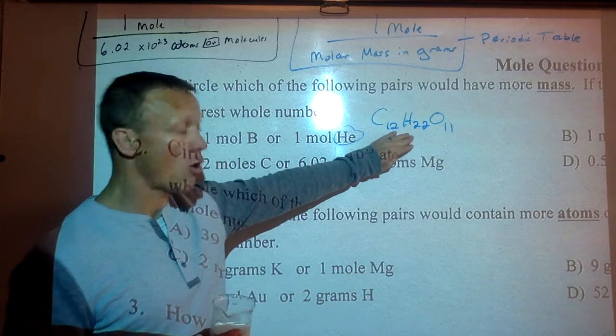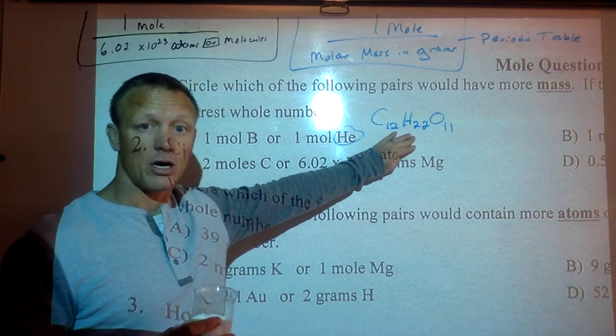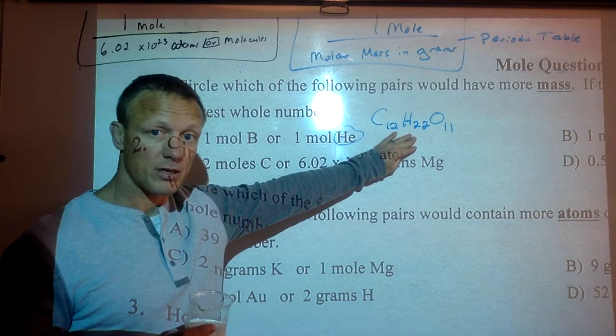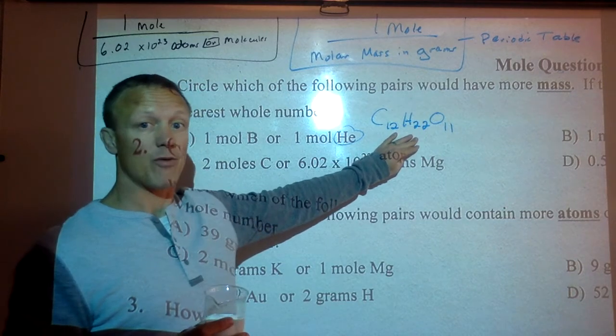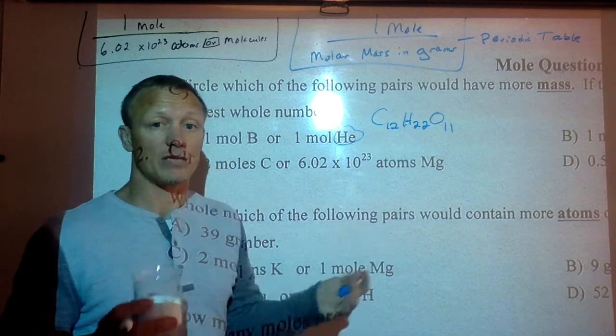6.02 times 10^23 molecules of sucrose sugar would actually have a mass of 342 grams. So that's how much a mole of that would weigh, because a mole of it is bigger, has more mass to it.